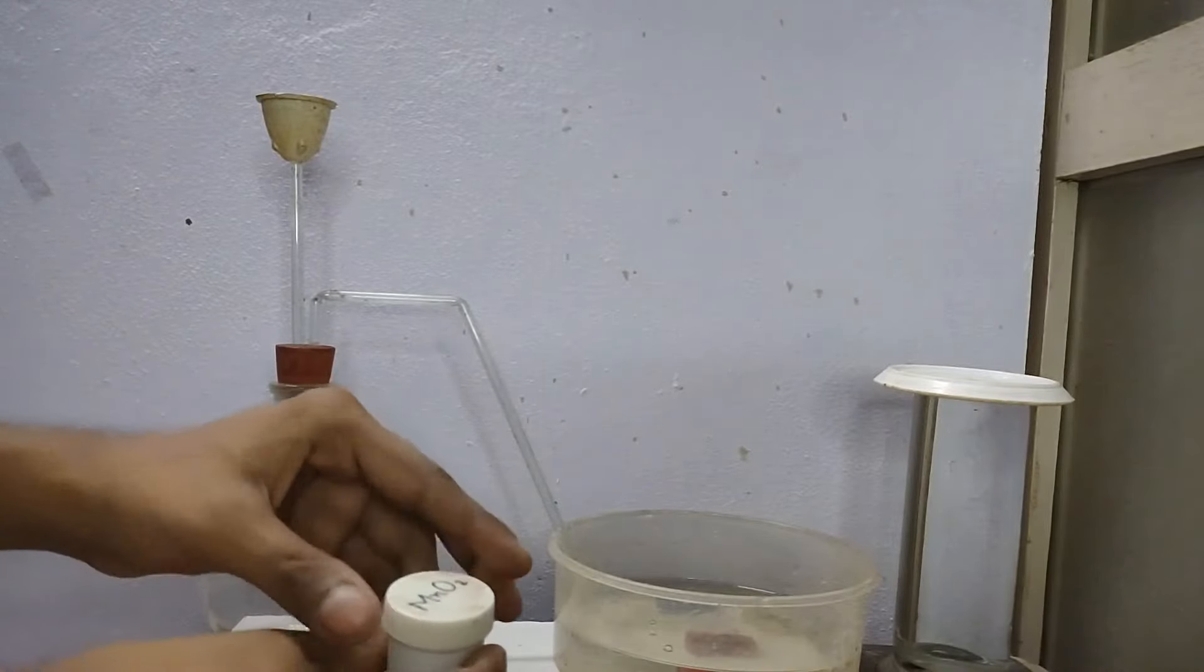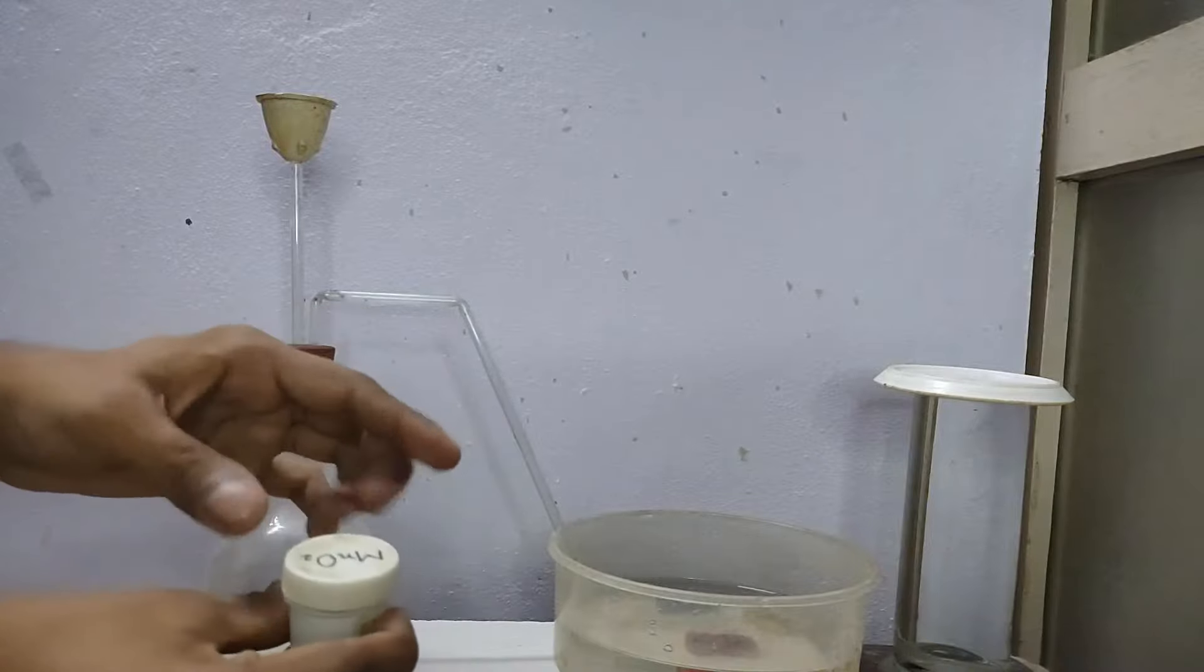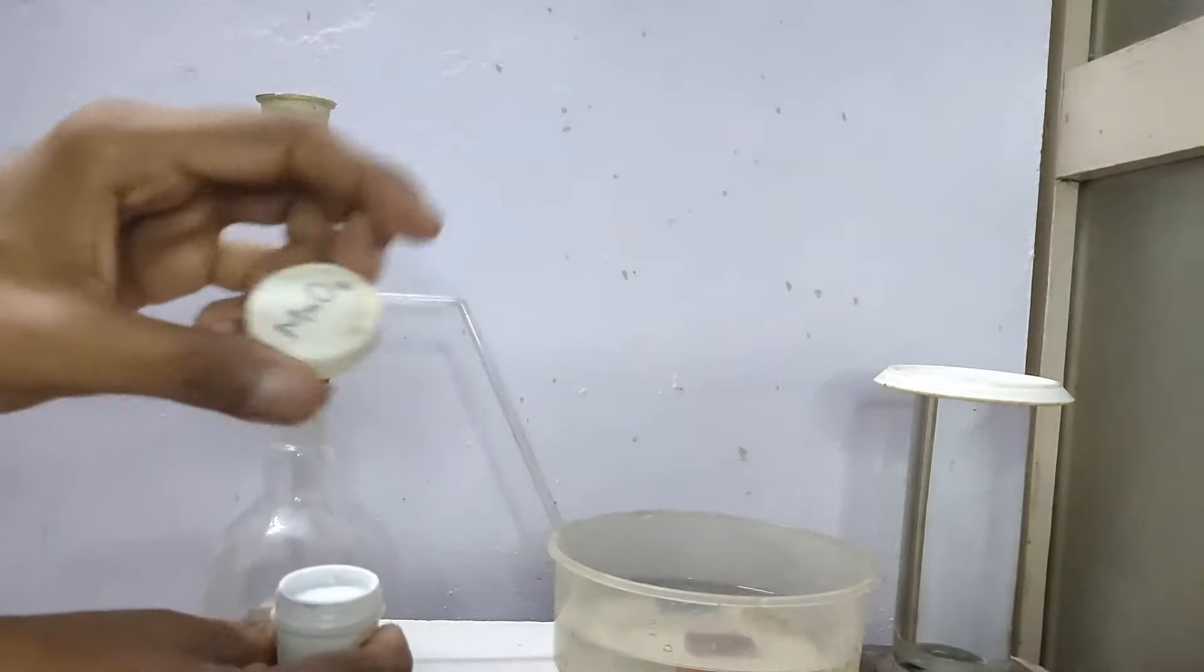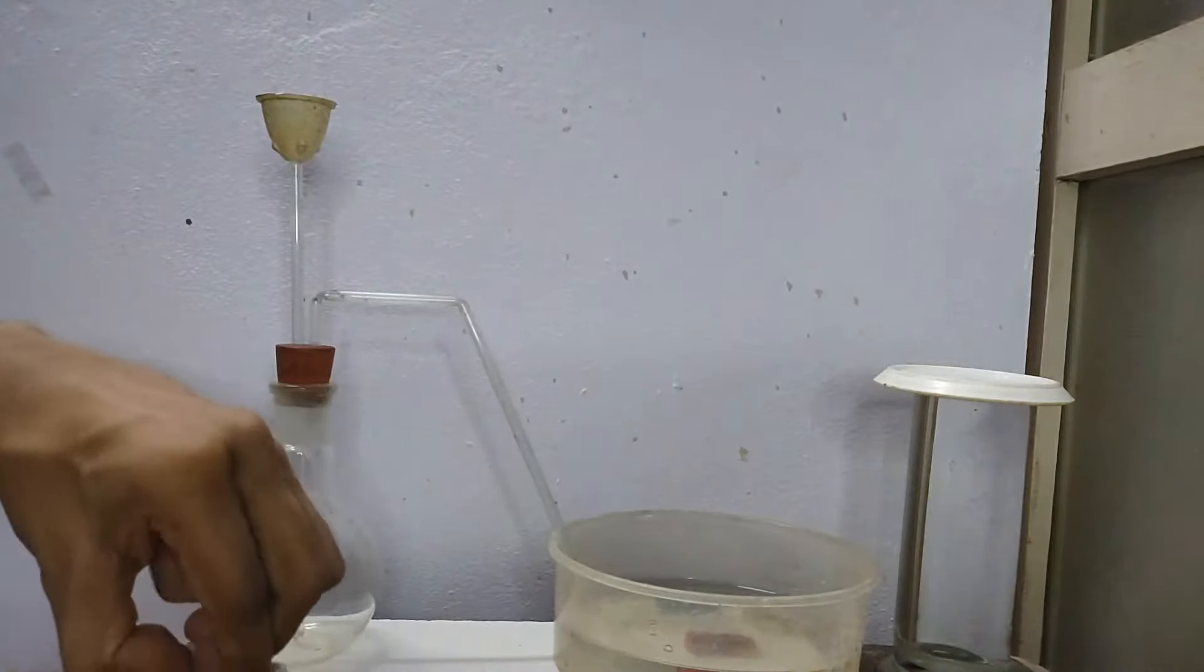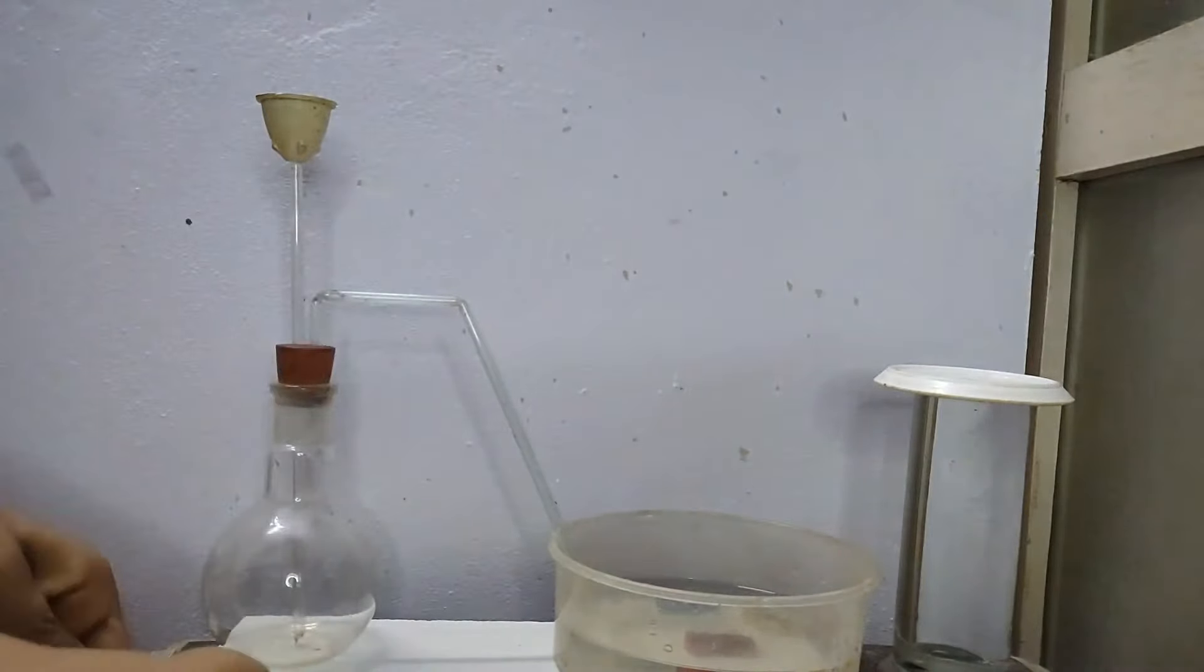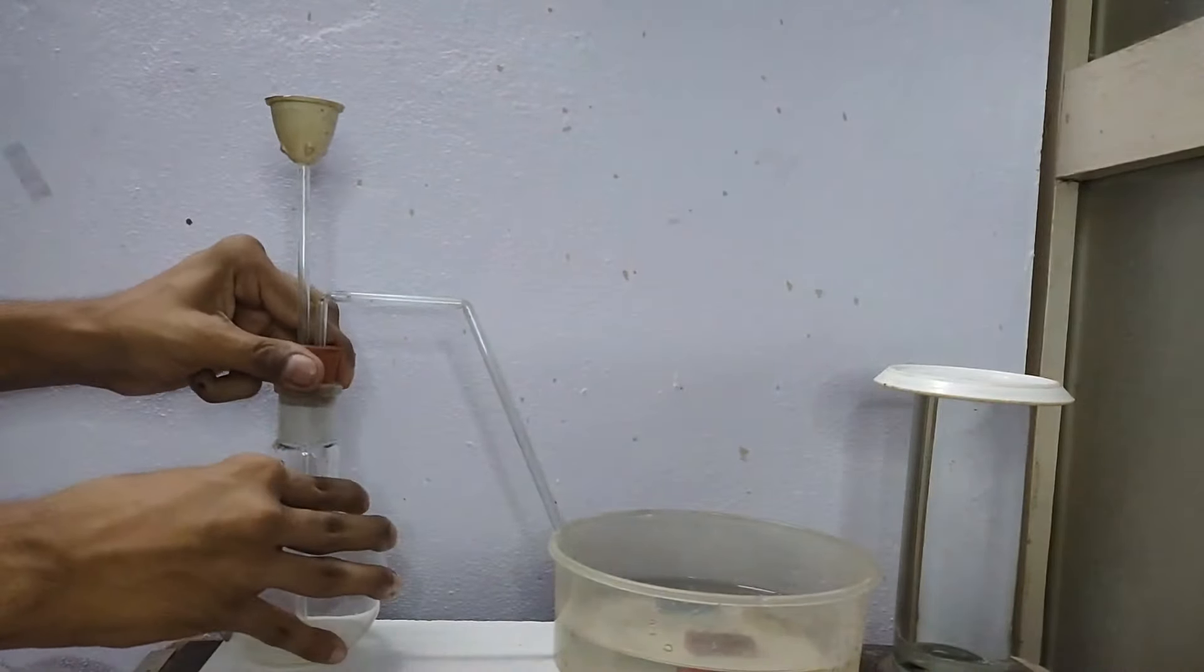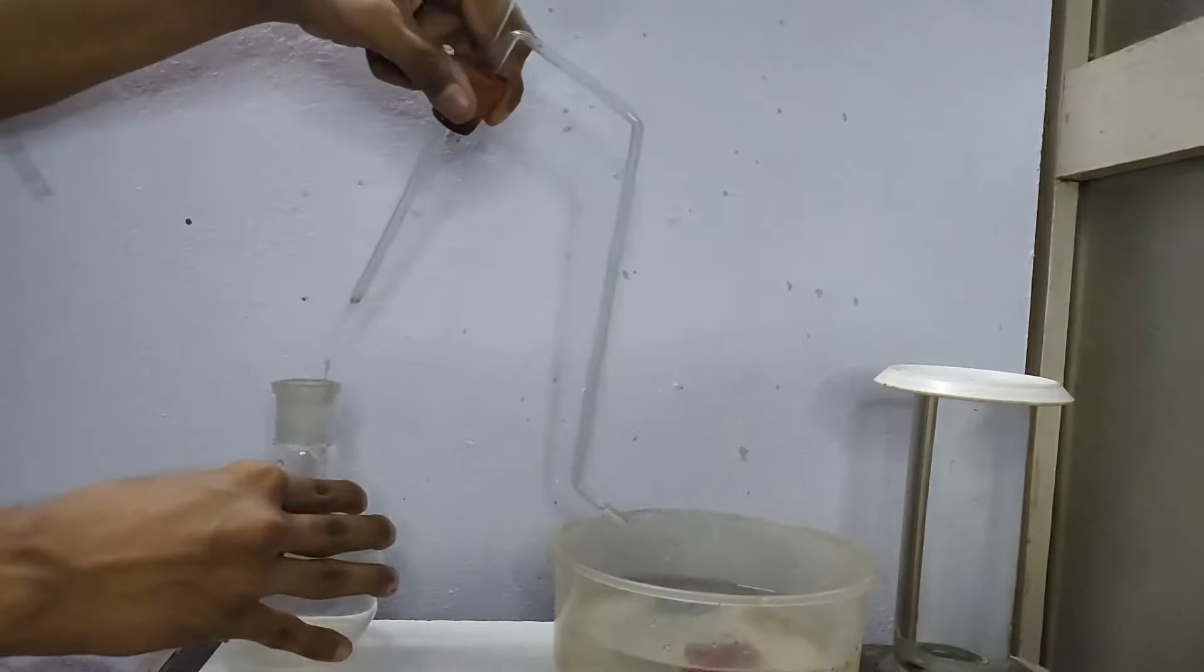First, this is manganese dioxide, MnO2. I will be placing this inside the flat bottom flask. So first I will take out the cork from the flask.